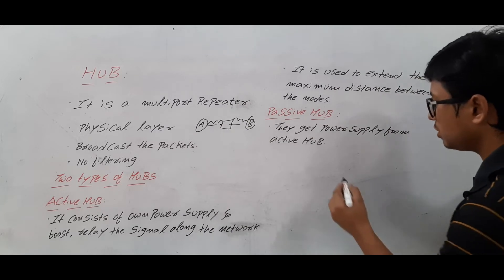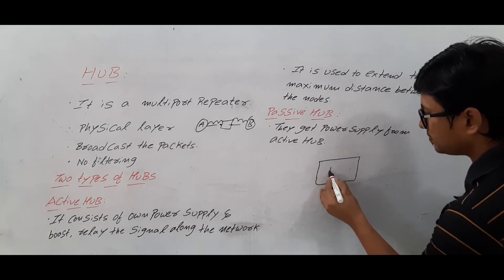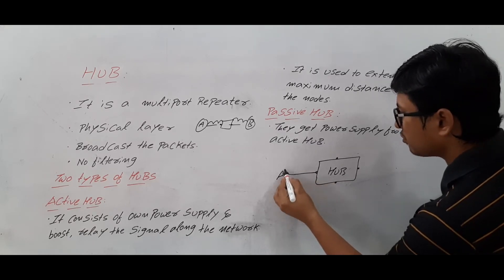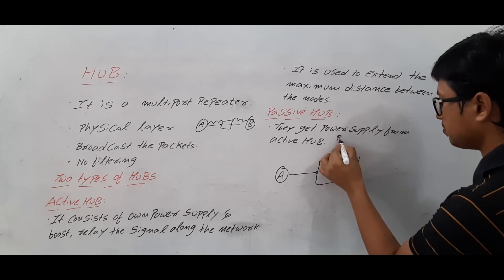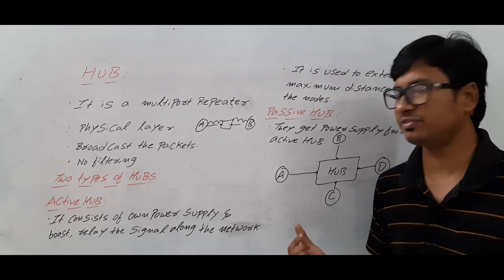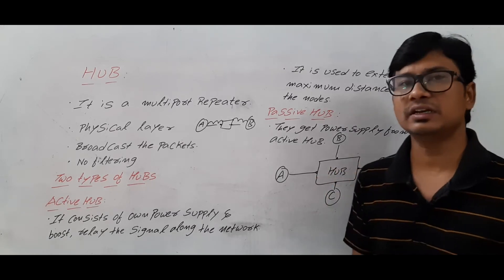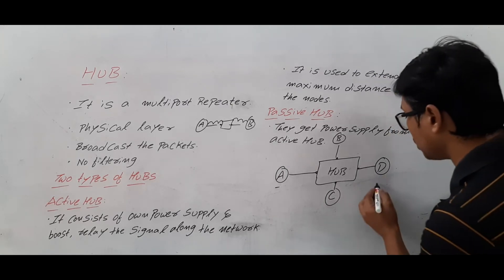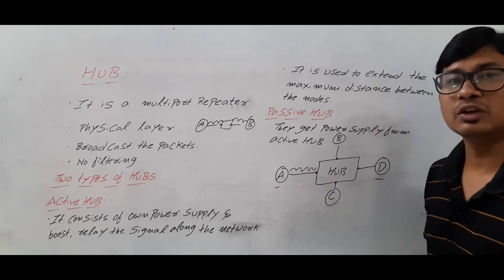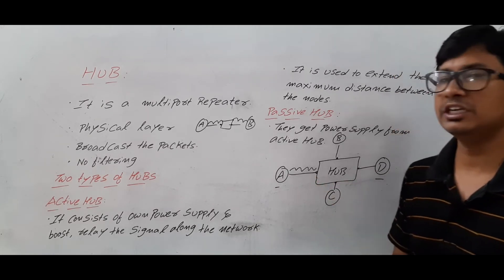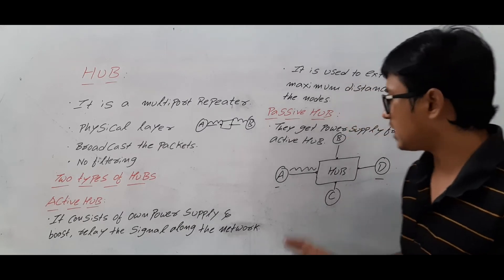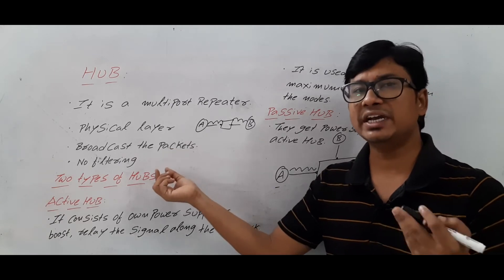Let's take that this is my hub with four ports. I can connect four devices: device A, device B, device C, and device D — which I can also call as interfaces. Now, if node A wants to transfer data to node D, it will transfer the data to the hub. The hub will not send the packet only to D — it uses the broadcasting concept, meaning it sends the packet to everyone, because it cannot identify the destination address.